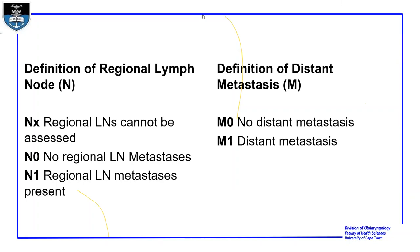In terms of lymph nodes, NX means regional lymph nodes cannot be assessed, N0 means no regional lymph node metastasis, and N1 means regional lymph node metastasis is present. For distant metastasis, M0 means no distant metastasis and M1 means distant metastasis is present.